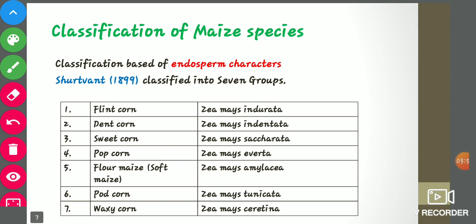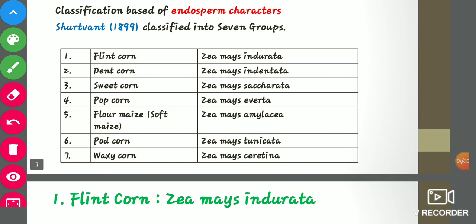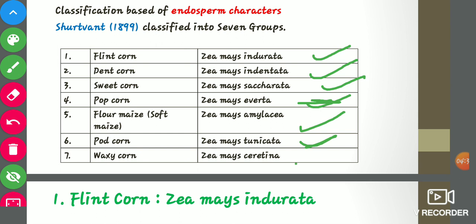The classification of maize is totally based on endosperm characteristics. Sturt in 1899 classified it into seven groups. The first is flint corn (Zea mays indurata), the second is dent corn (Zea mays indenta), the third is sweet corn (Zea mays saccharata), the fourth is popcorn (Zea mays everta), the fifth is flour maize or soft maize (Zea mays amylacea), the sixth is pod corn (Zea mays tunicata), and the seventh is waxy corn (Zea mays ceratina).